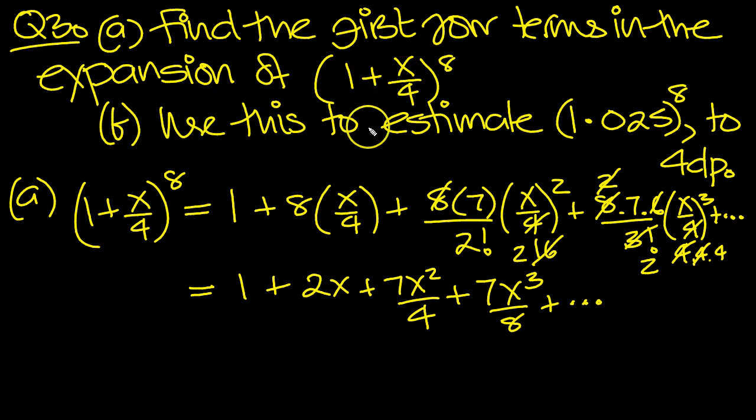Okay, so use this to estimate the value 1.025. So 0.025, isn't it? So 1 plus 25 over 1,000 to the power of 8. Which is 1 plus, divide 25 into 1,000, is 1 over 40. You can tap that in the calculator if you need to.